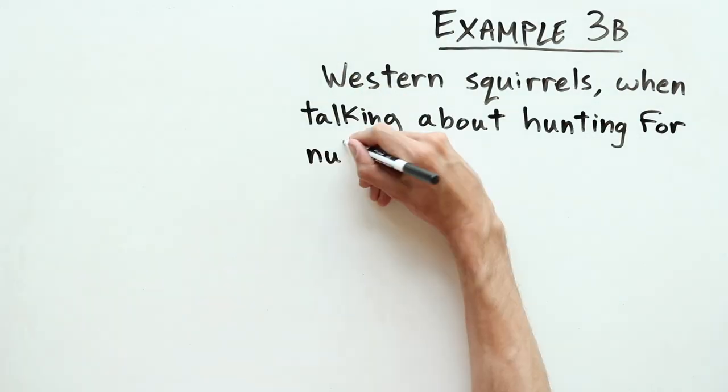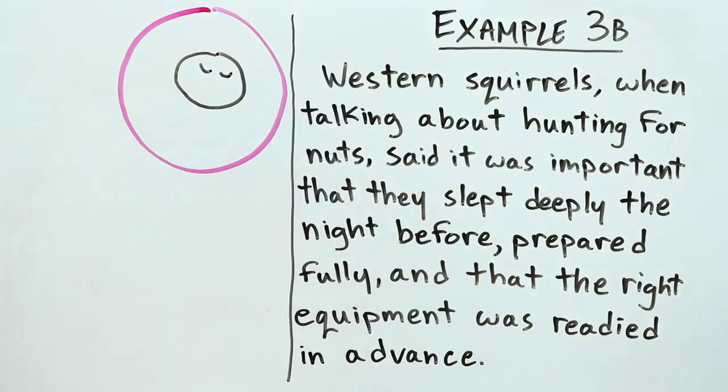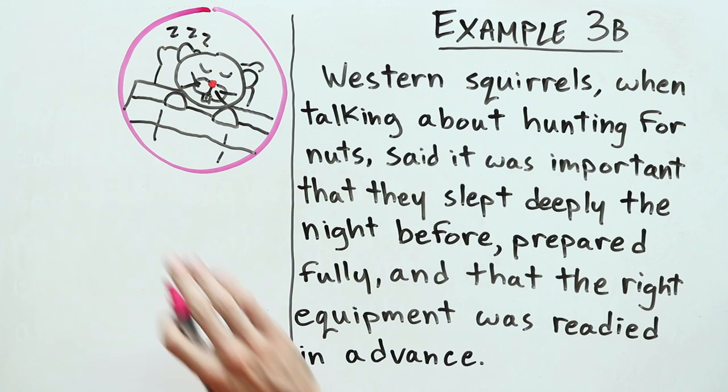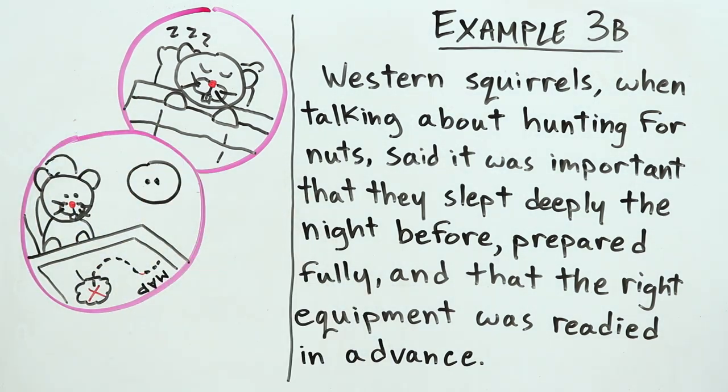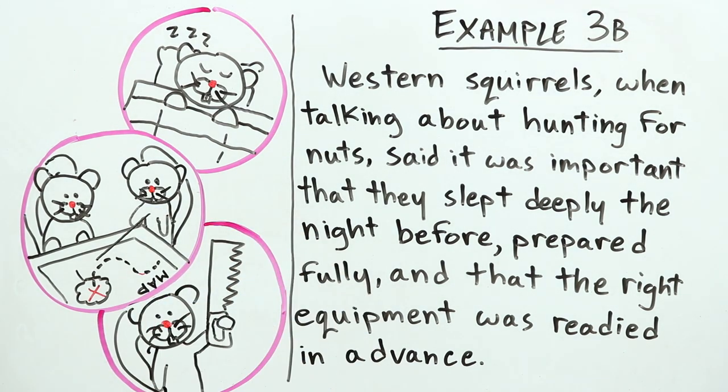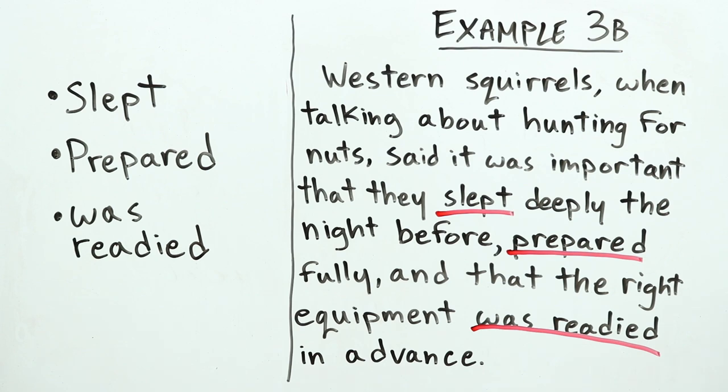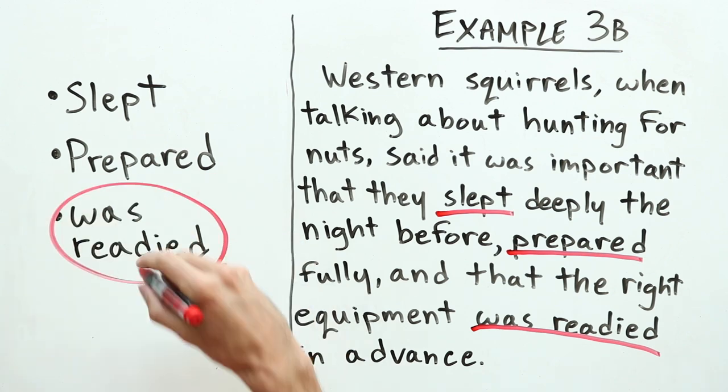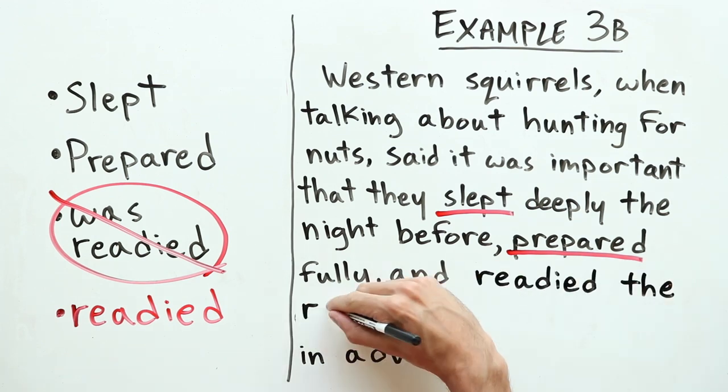In this next example, she wrote, Western Squirrels, when talking about hunting for nuts, said it was important that they slept deeply the night before, prepared fully, and that the right equipment was readied in advance. What do you think? Is this in parallel form? Listen to the linked words and list them in a column if you need to. No, that's not right, but this sounds and looks much better.